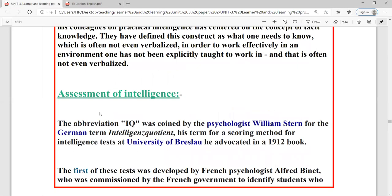Let's start the video. First of all, we are going to discuss assessment of intelligence. How do we assess intelligence? The abbreviation IQ, the intelligence quotient, was coined by the psychologist William Stern. You will have been asked for several times in the CTET, this question comes. The word IQ, the abbreviation was given. William Stern asked for the German term intelligenzquotient. A German term. His term for a scoring method for intelligence test at University of Breslau he advocated in a book in 1912. In 1912, this book was given the first time by William Stern.